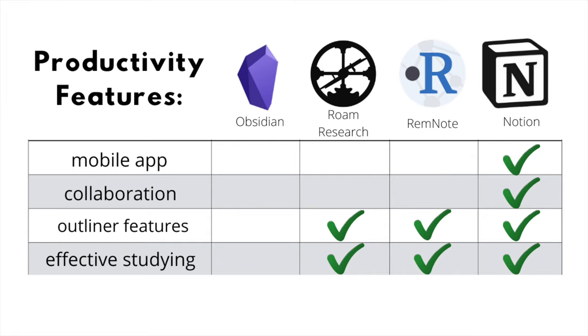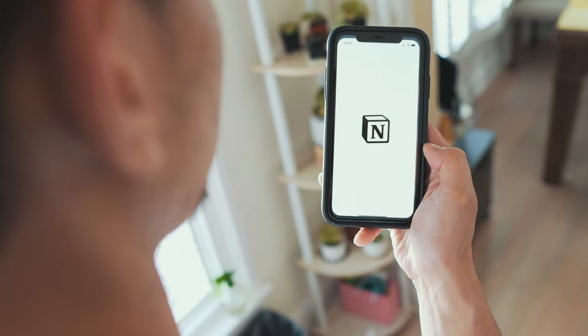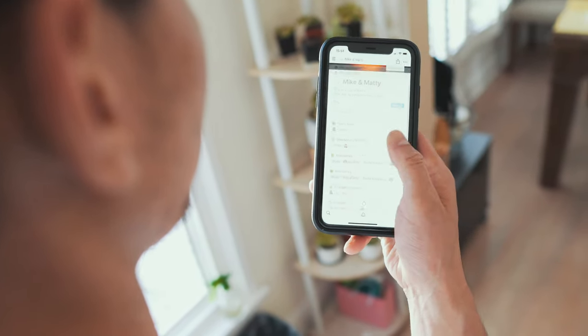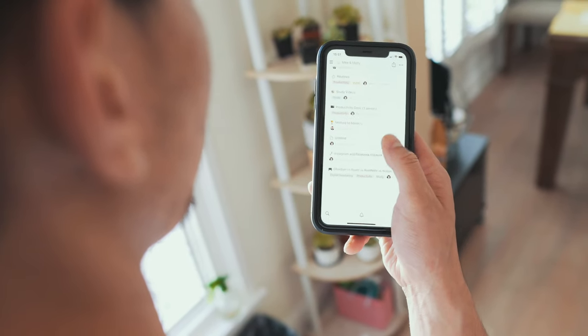Let's talk about the productivity potential of these note-taking apps in relation to each other. Here is a table summarizing some of the key features and which apps are capable of each — this is where we begin to see the differences. You can see that Notion has many of these features, which makes it a better app for productivity compared to Obsidian. That's not to say you can't be productive with Obsidian, but let's go through some of these features. First is the mobile app — only Notion has a mobile app at the moment, but the other three programs have plans to develop one in the future. Having a mobile app lends itself to increased productivity as you can easily access your notes on the go.